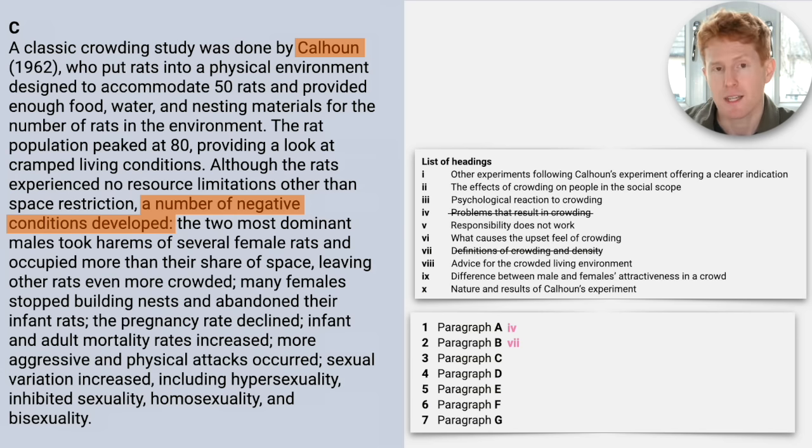Score that out and move on to paragraph E. Pause the video, choose the correct answer, then we'll look at it together. Okay, so I think the answer is here. Okay, the answer in this case is six. What causes the upset feeling of crowding? Why? Well, this paragraph looks at the several reasons why crowding makes us feel uncomfortable. Okay, so what causes, what causes is in the heading, is linked with reasons, several reasons, which is in the text, and the word uncomfortable, which is in the text, relates to the feeling of upset, which we have in the heading. So six is a logical heading for paragraph E.